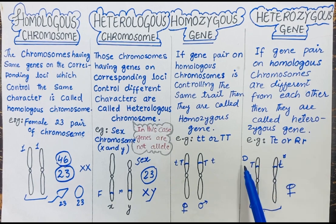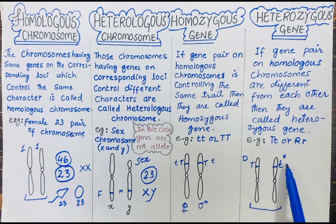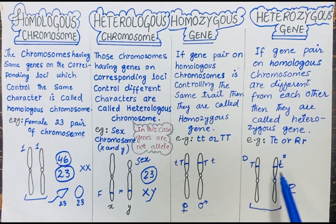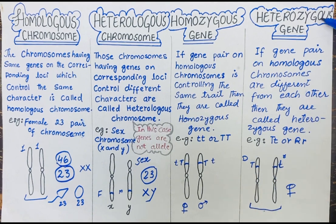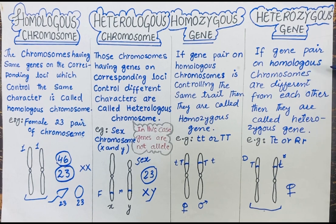On the other hand, if the two alleles are different — one is a dominant form and the other is a recessive form — then this type of gene is called a heterozygous gene. So hopefully you will understand these four topics.